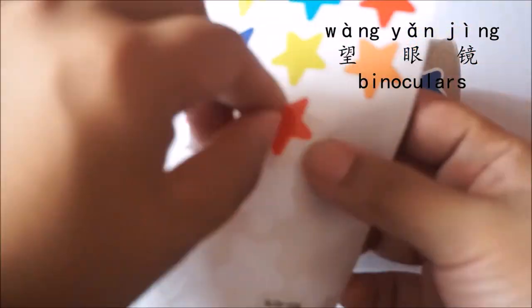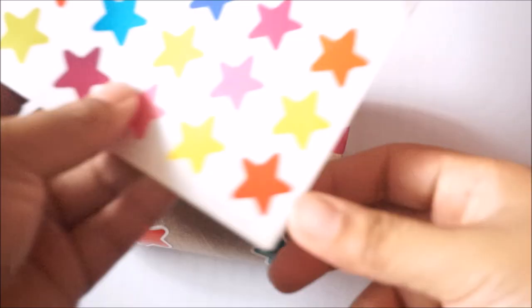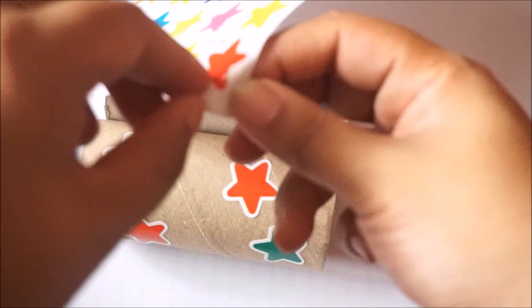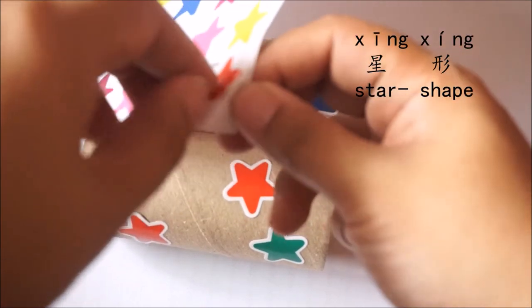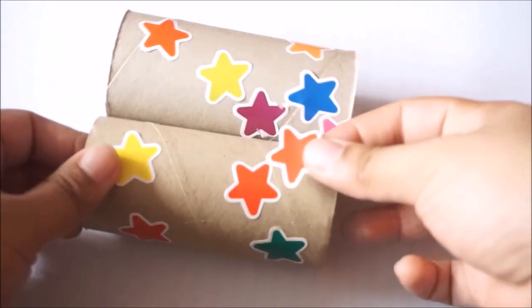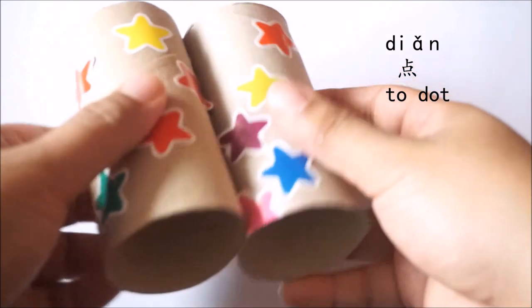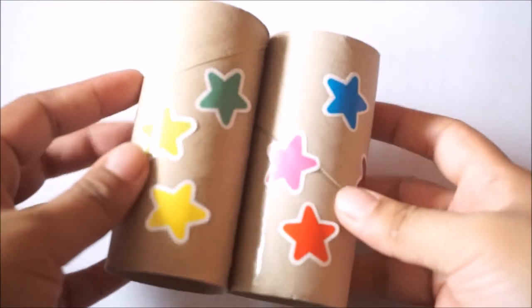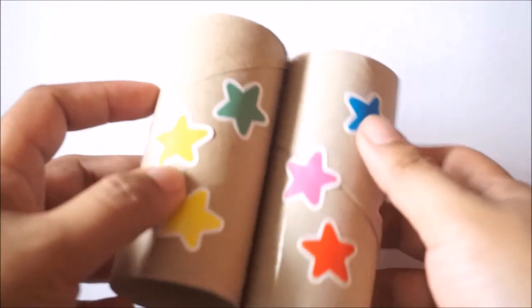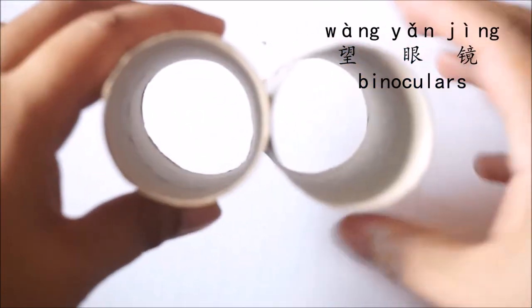You can also label it by writing your name on your binoculars. This is our craft for today. What is it again? 望眼镜 (binoculars). I'm almost done with sticking stickers on my 望眼镜. I think this can be the last piece. And I can stick it on this side. Let's take a look. Wow!